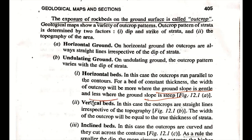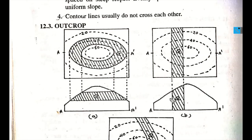For vertical beds, the outcrops are straight lines irrespective of the topography. The width of the outcrop will be equal to the true thickness of the strata. This is because the vertical beds cut straight through any topographic surface without being deflected.